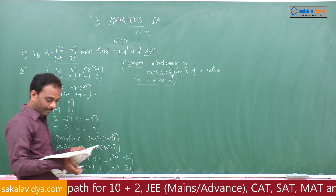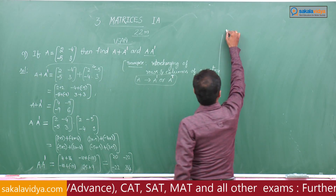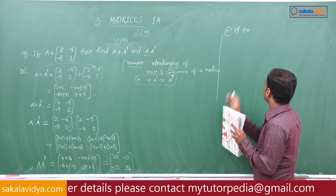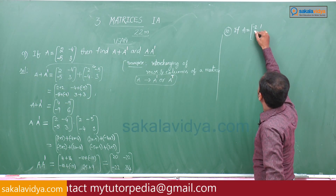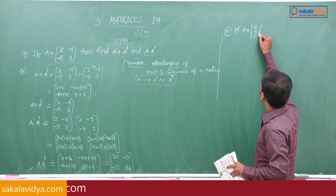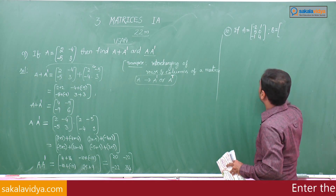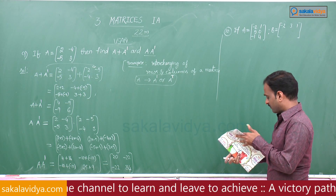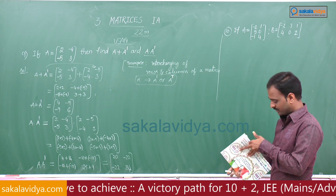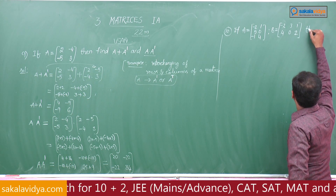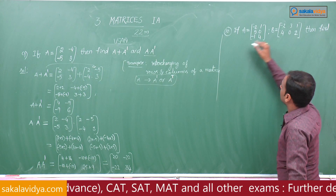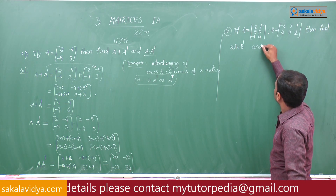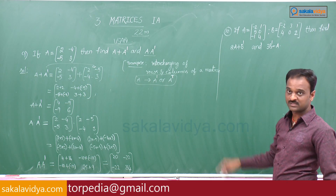Problem number 10: If A equals [[-2, 1, 5], [0, -1, 4]] and B equals [[-2, 3, 1], [4, 0, 2]], find 2A plus B transpose, and 3B transpose minus A.